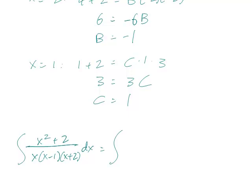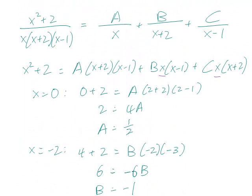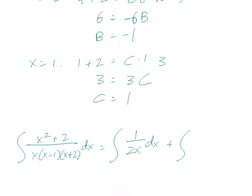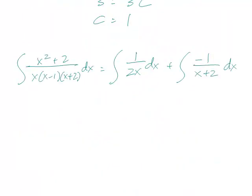That's equal to the integral - A was the one associated with x, so this is 1 over 2x dx, plus B is the one associated with x plus 2, so that's minus 1 over x plus 2 dx. And finally, C is x minus 1, so this is plus 1 over x minus 1 dx.